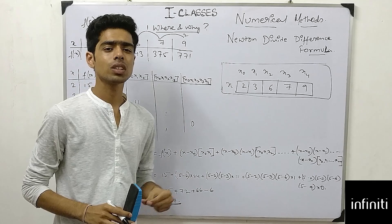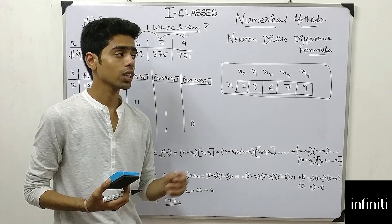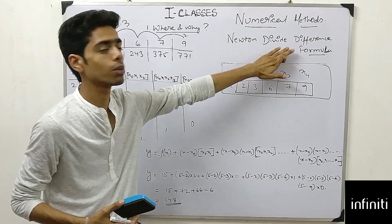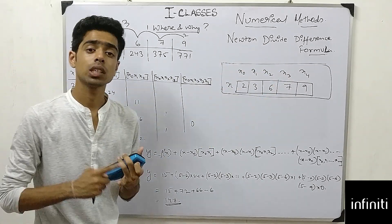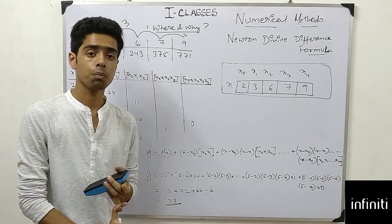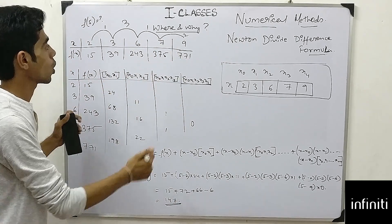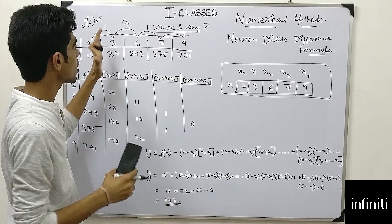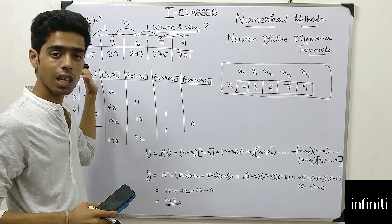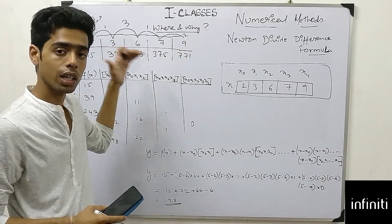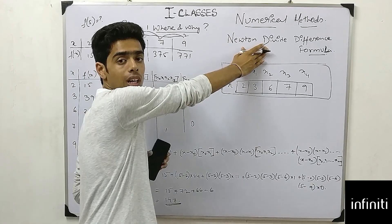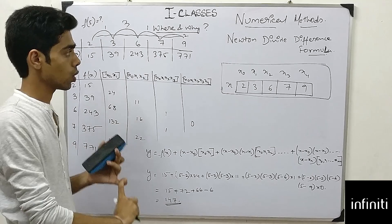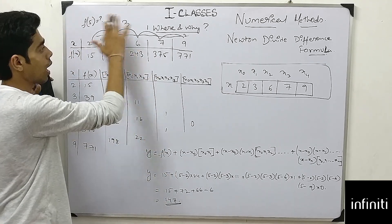You can also use Lagrange's formula here, but we are using Newton's Divided Difference Formula. Both Lagrange's and Newton's Divided Difference formulas can solve problems with an unequal sequence of x-values. When the spacing is unequal, both Newton's Divided Difference and Lagrange interpolation formulas can handle those problems.